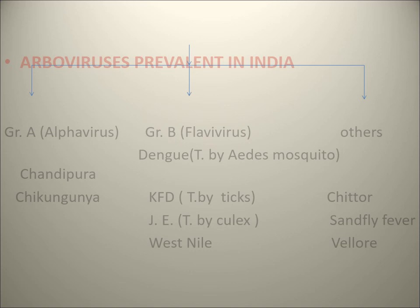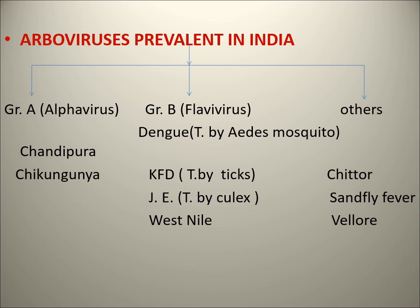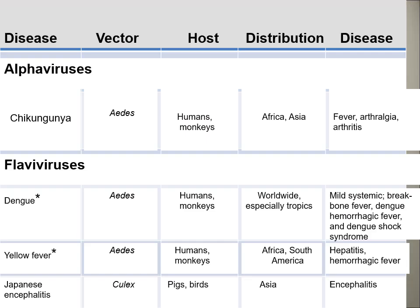The arboviruses prevalent in India: Group A - Alphavirus - includes Chandipura and Chikungunya. Group B - Flavivirus - includes Dengue, KFD (Kyasanur Forest Disease), Japanese Encephalitis, and West Nile. Others commonly important in India are Sand Fly Fever and Crimean-Congo Hemorrhagic Fever virus. This list shows the complete picture of vectors, hosts, and the countries where these diseases occur.